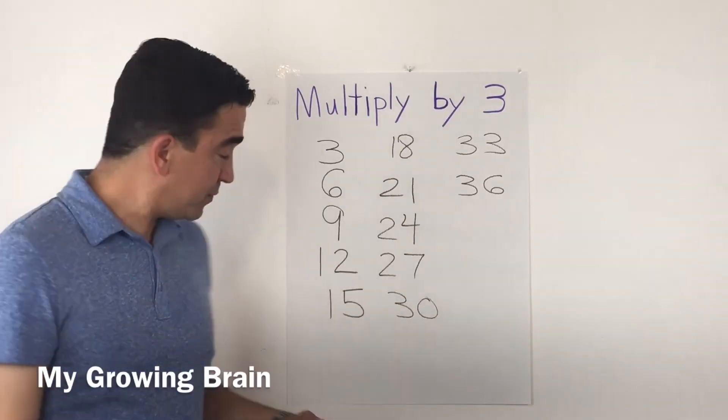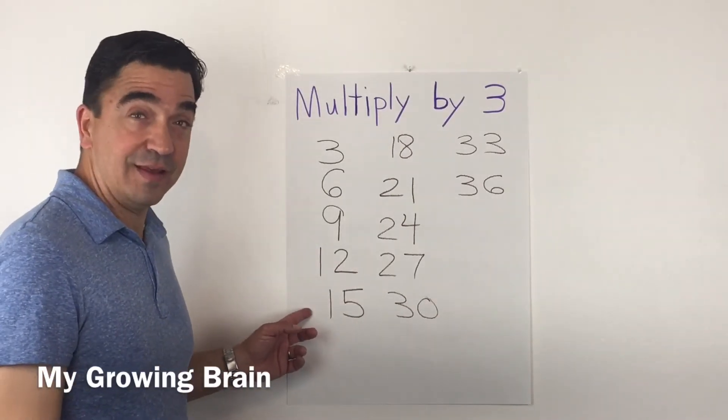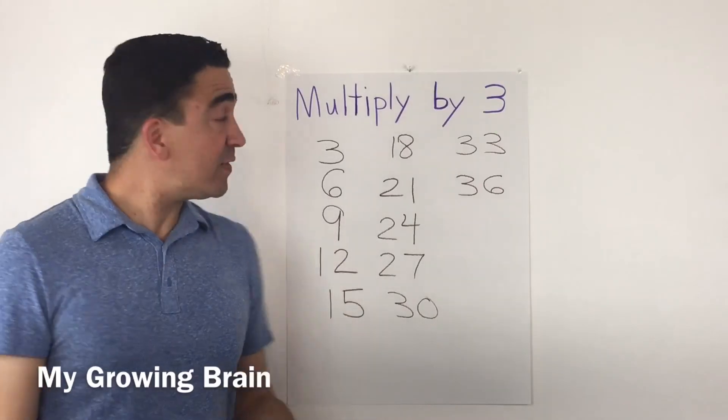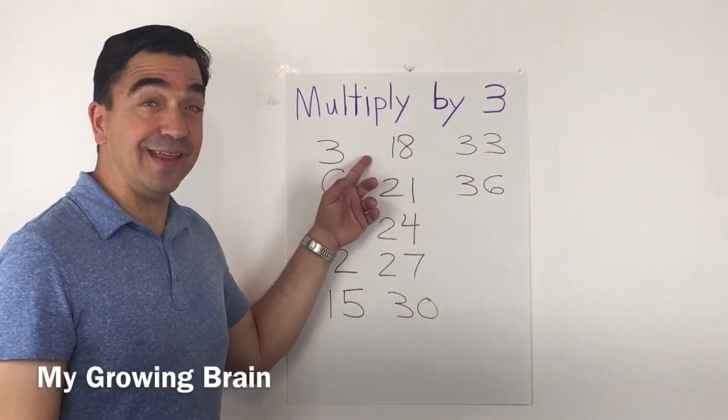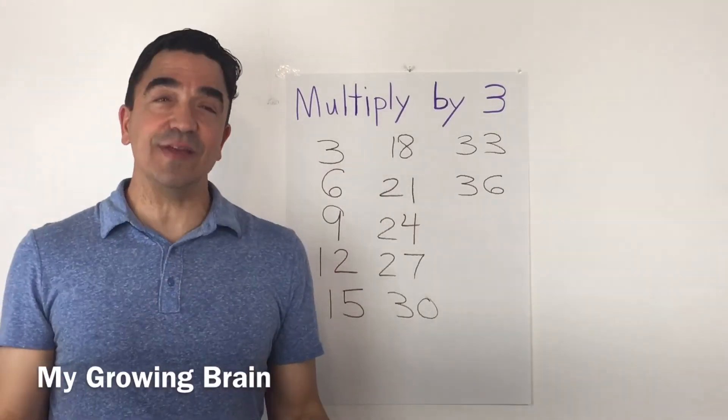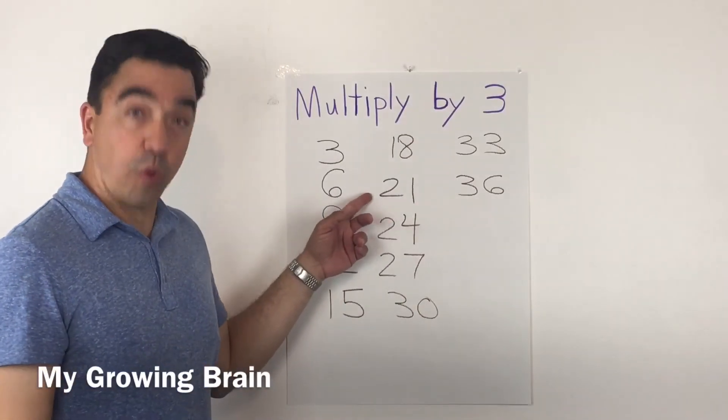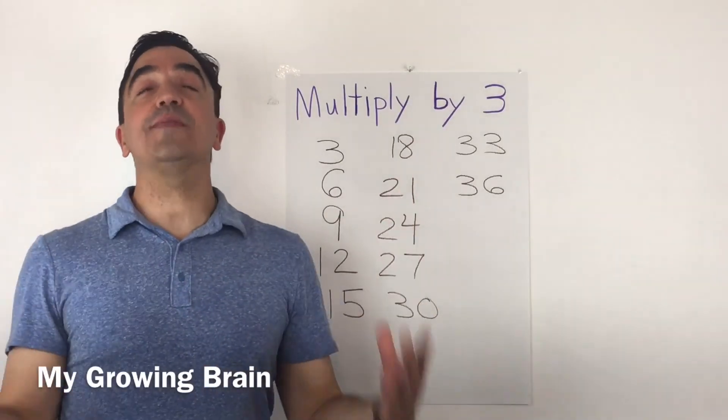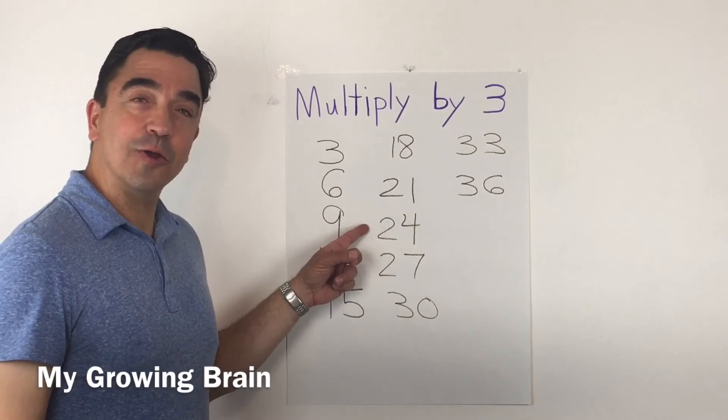Three times five, 15. Three times six, 18. Three times seven, 21. Three times eight, 24.